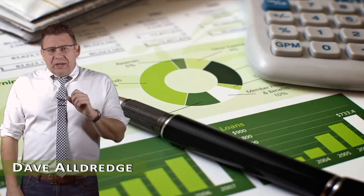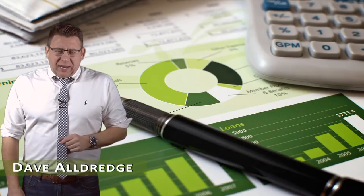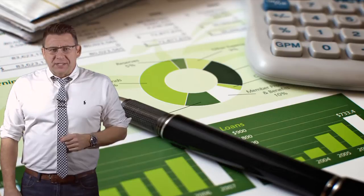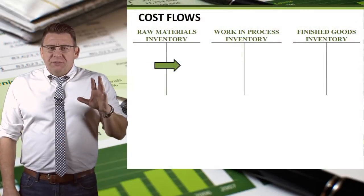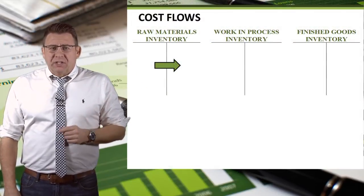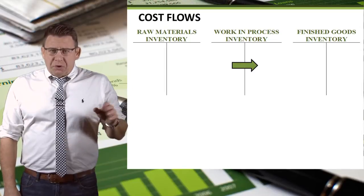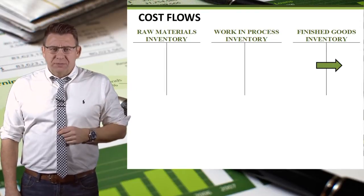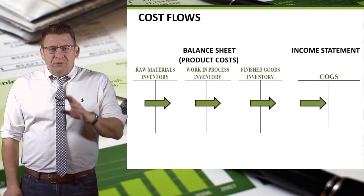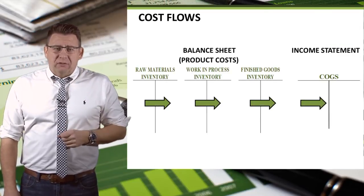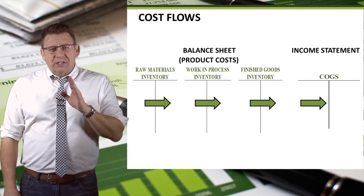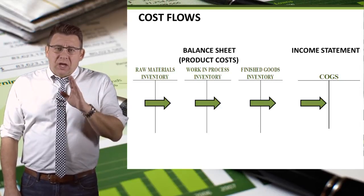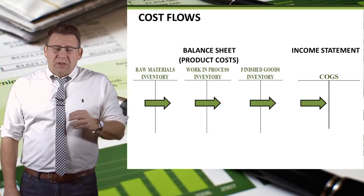One important thing we need to understand is the flow of costs through the manufacturing process. The cost flows move from the raw materials account to the work in process account to the finished goods inventory account. These three inventory accounts are all balance sheet accounts. Once a product is sold, the cost is moved to a cost of goods sold account, which is on the income statement.